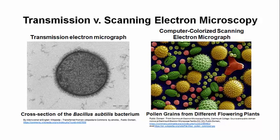Scanning electron microscopy, shown on the right, can magnify in the range of about 100,000, down to a resolution of about 3 nm, so slightly less than transmission electron microscopy.